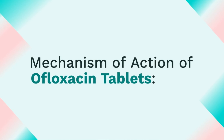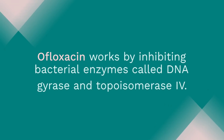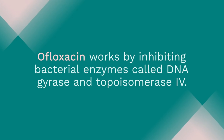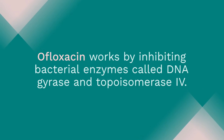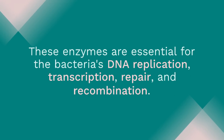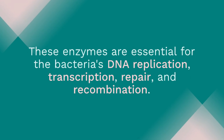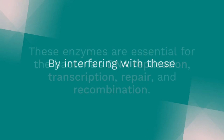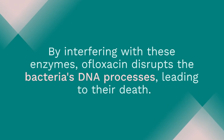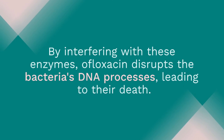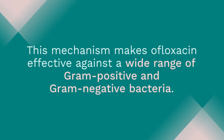Mechanism of action of afloxacin tablets. Afloxacin works by inhibiting bacterial enzymes called DNA gyrase and topoisomerase-4. These enzymes are essential for the bacteria's DNA replication, transcription, repair, and recombination. By interfering with these enzymes, afloxacin disrupts the bacteria's DNA processes, leading to their death. This mechanism makes afloxacin effective against a wide range of gram-positive and gram-negative bacteria.